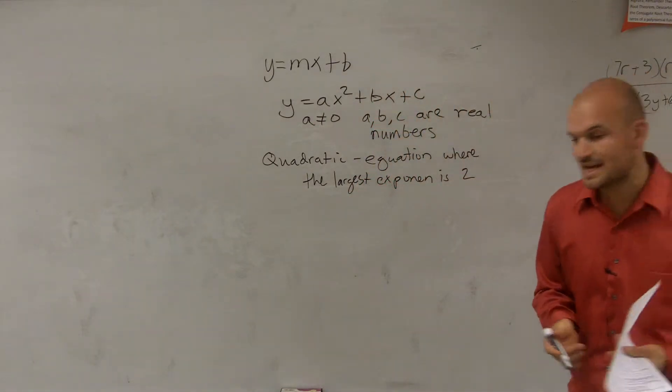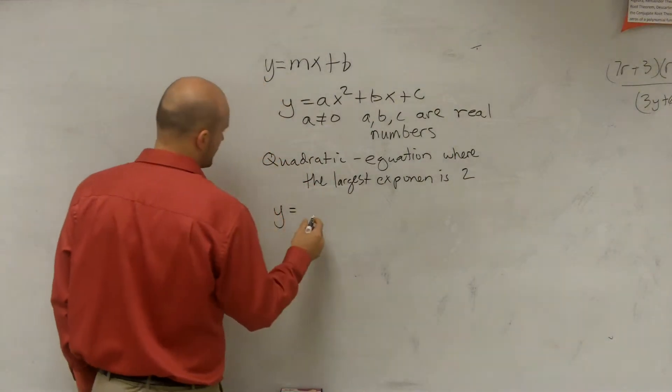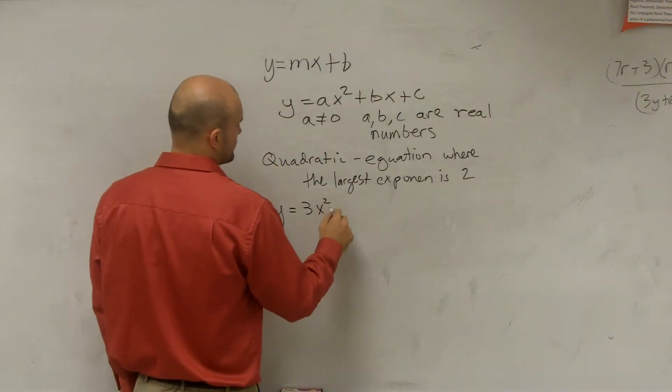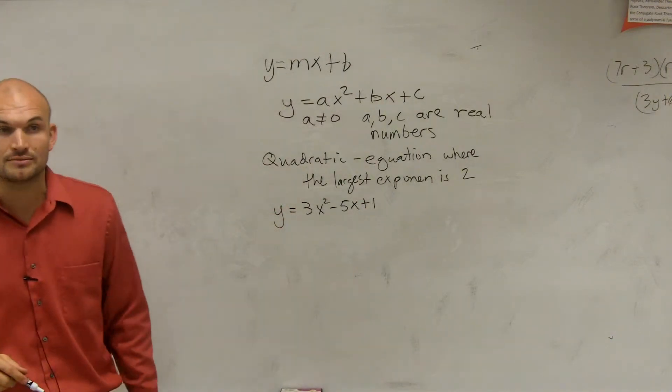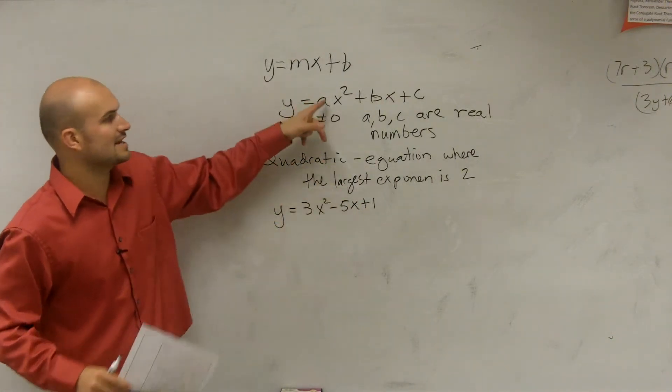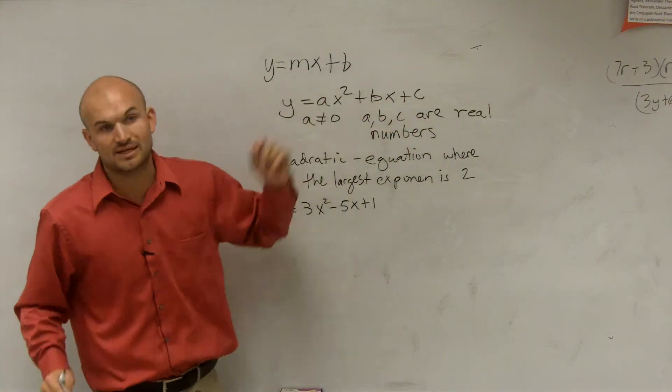So let's go through some examples of this. So y equals 3x squared minus 5x plus 1. That's a quadratic equation, all right? And that's a very famous quadratic equation, because it's in our form ax, where we have an a, b, and a c.